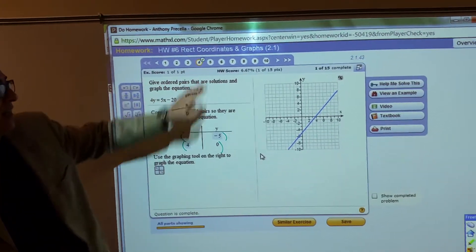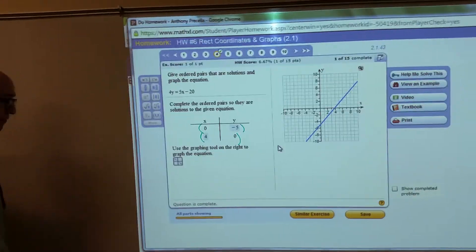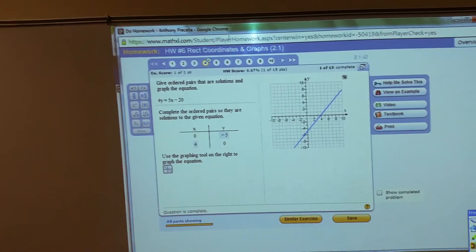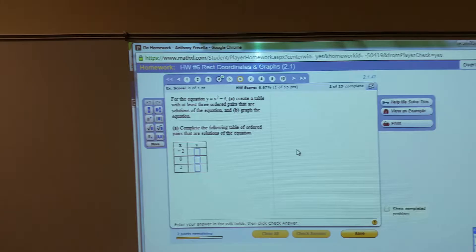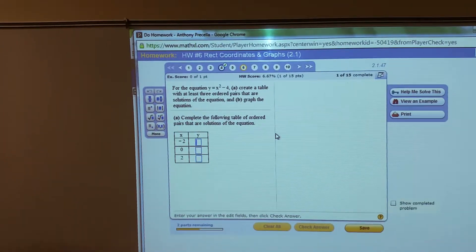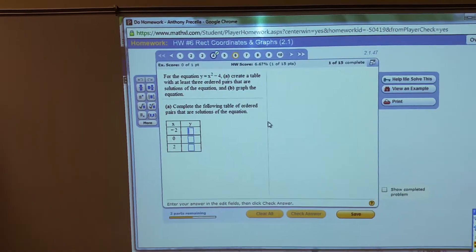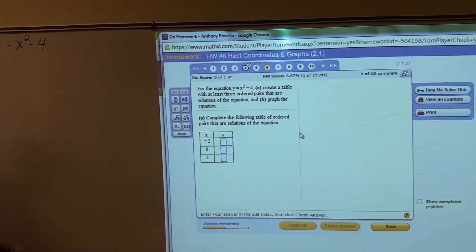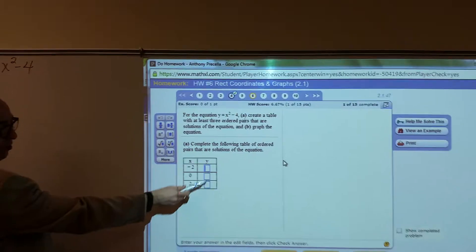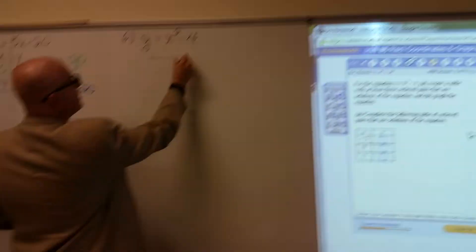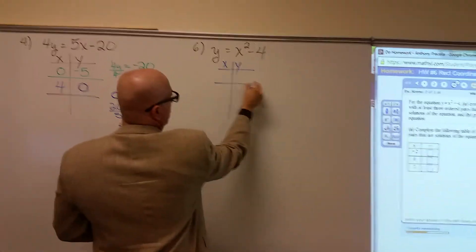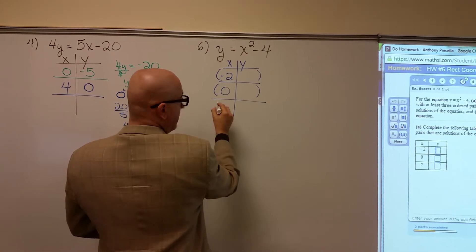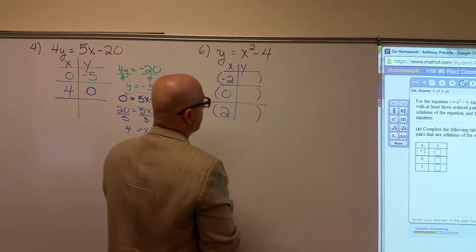That's using the line tool. You're just going to click the line tool and then plot the two points. I think number five is another using just the line tool. So let's do a different one now, one that doesn't just use that same line tool. So let's look at number six.